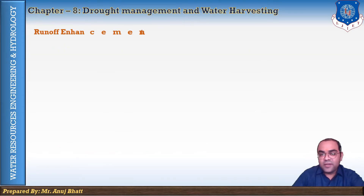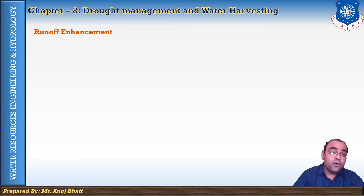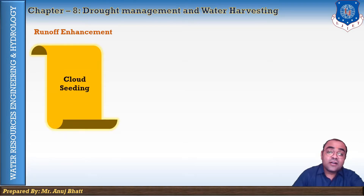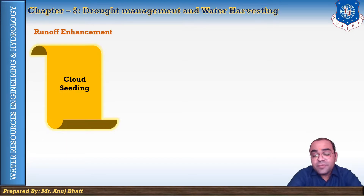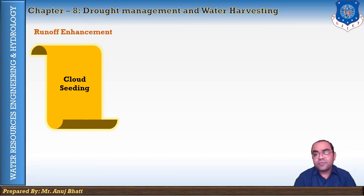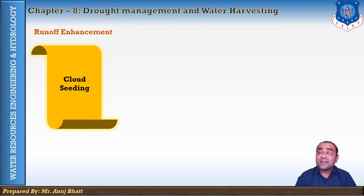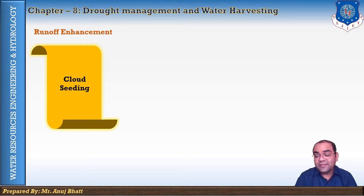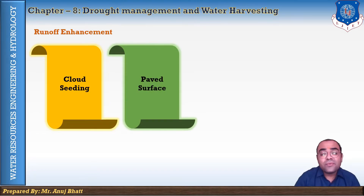The fourth method is runoff enhancement. This can be performed by cloud seeding, through which the amount of precipitation can be increased by about 10%. Weather modification is done to increase cloud evapotranspiration and decrease seeding losses. Cloud seeding is therefore a method to enhance runoff.